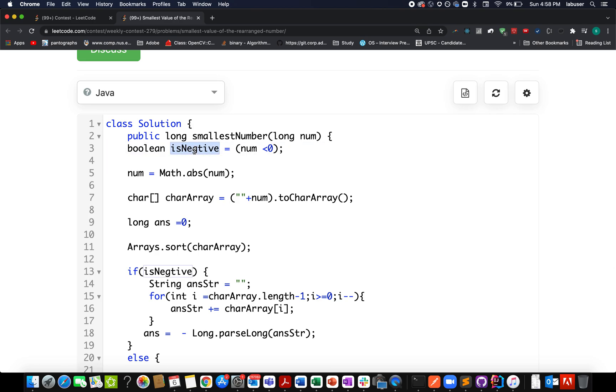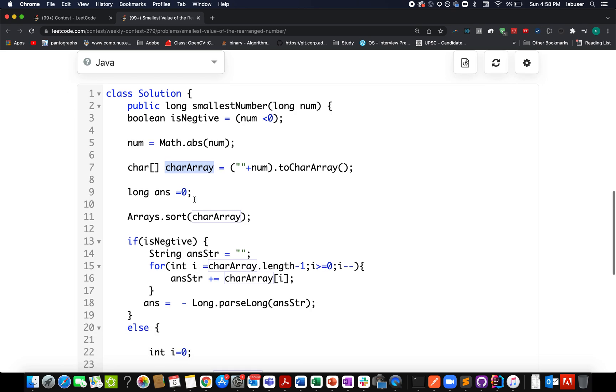Here I have taken a variable isNegative. In case my num is less than zero, this would be updated to true. Moving further, I create the absolute value of num, thinking whether it was negative or positive. This would be updated to positive always. Then going forward I create a char array out of the num that is given to me. I also create a new variable named answer that is responsible for storing the answer.